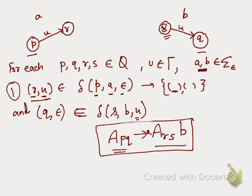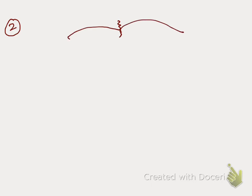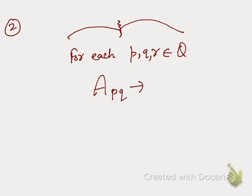The second production rule covers the case when the stack becomes empty at a midpoint. For each p, q, r belonging to the set of states, we add the production A_pq → A_pr · A_rq.